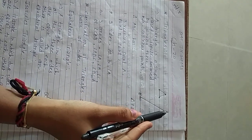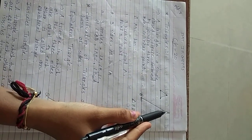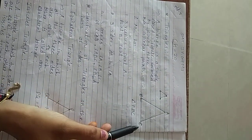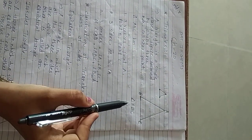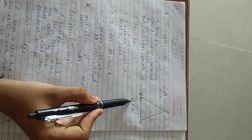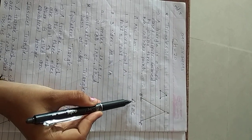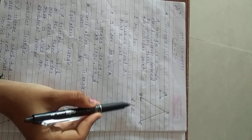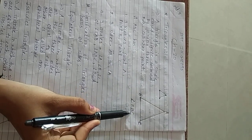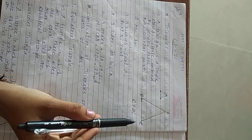Here I have given the names A, B, and C. Here is the symbol of triangle. So we will write triangle ABC.